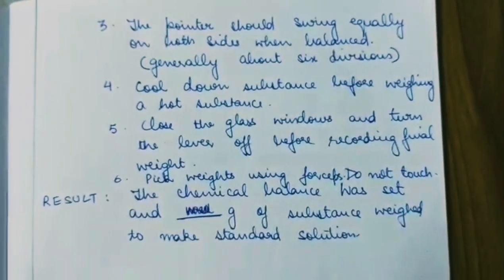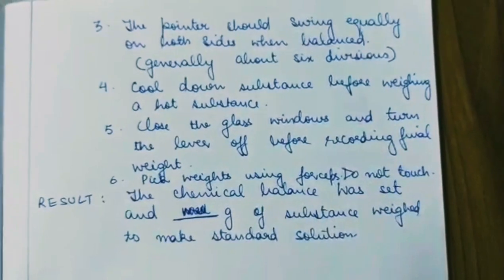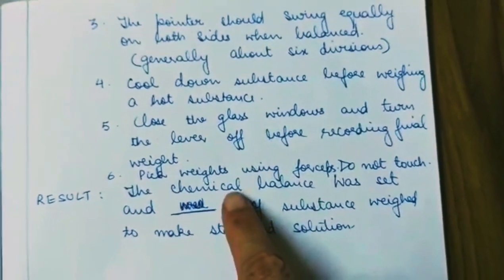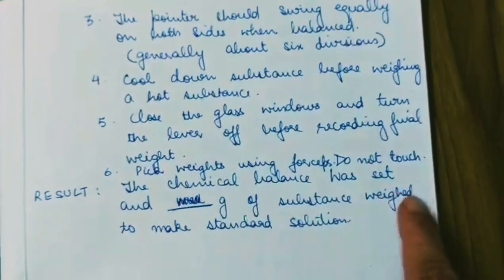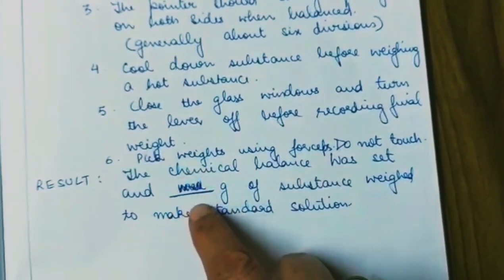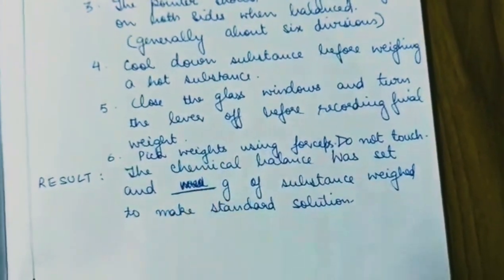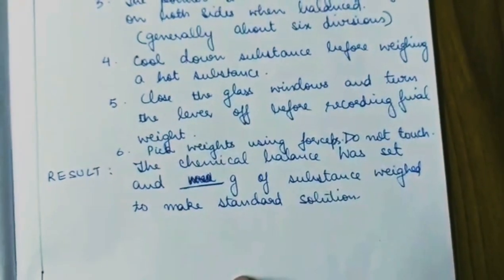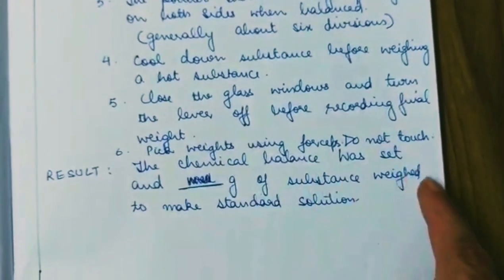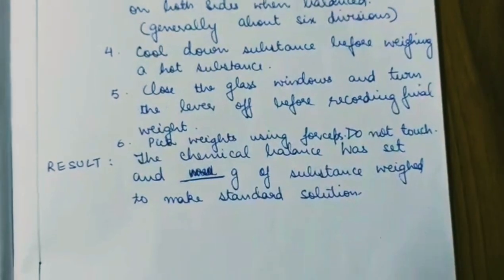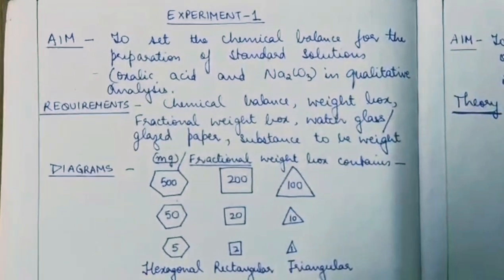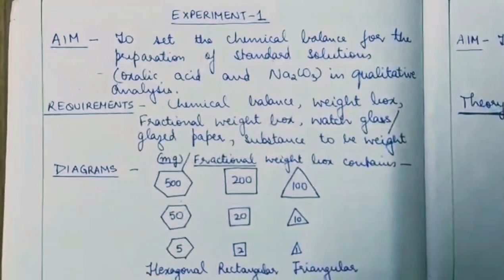Following the precautions would be the result. The result states: 'Chemical balance was set,' and here you're going to write down whatever mass you have calculated of the substance, weighed to make a standard solution. This completes the right-hand side content.